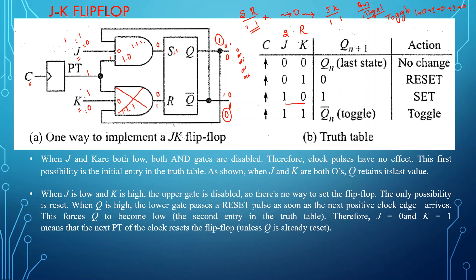Now when both J and K are equal to 1: looking at the output, Q is 1 and Q-bar is 0. The gate receiving Q-bar (upper gate) is disabled and the gate receiving Q (lower gate) is enabled, causing a reset. In the next instance the roles reverse — the previously disabled gate becomes enabled and the enabled gate becomes disabled — and this repeats continuously, making the output continuously change, which is the toggle behavior.